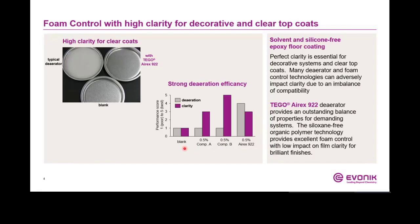We poured the system into lids of metal cans, and here you see a comparison of Tego RX 922 to a conventional deaerator. Besides compatibility, RX 922 also provides a very strong deaerating effect. In this comparison of three different deaerators, the gray column shows deaerating efficiency — a higher value means better deaeration — and the deep purple column shows clarity or compatibility. Tego RX 922 is our highlight especially for clear coats, whether epoxy or polyurethane.